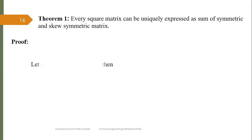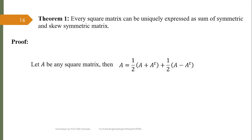We begin by considering A to be any square matrix. Then one can always write A as (1/2)(A + A^T) + (1/2)(A - A^T). We haven't used any mathematical property here; after opening the brackets, the A^T and -A^T cancel, and we are left with 2A/2, which is just A. So this equation is mathematically correct.